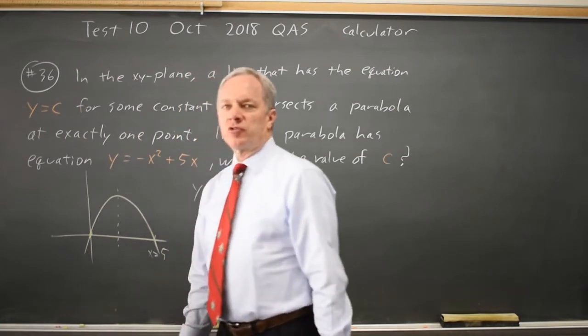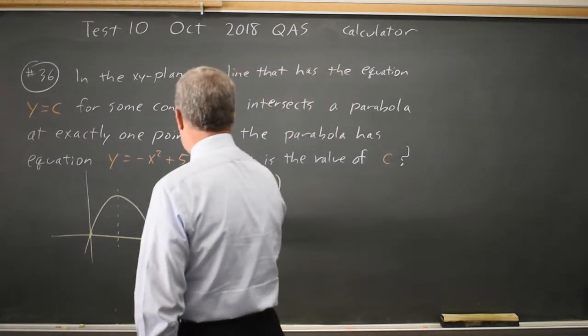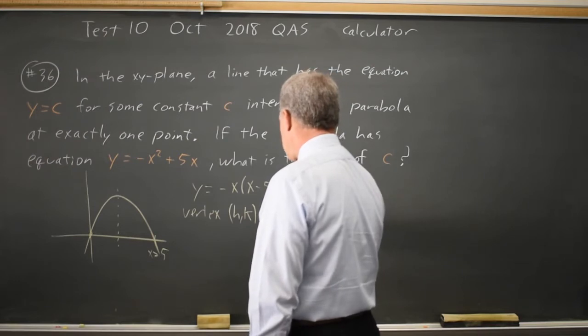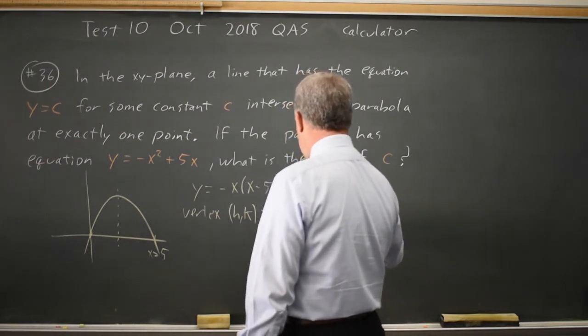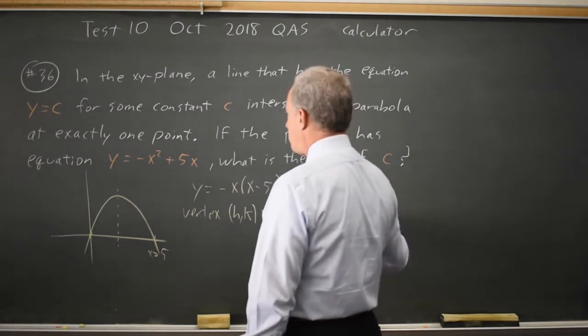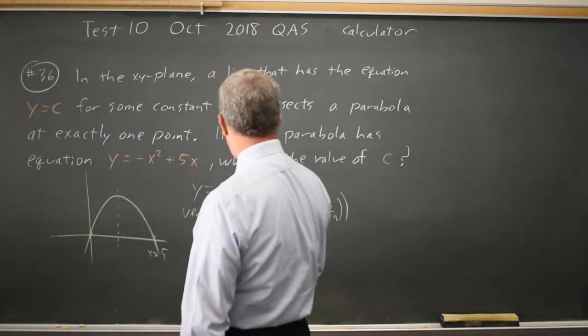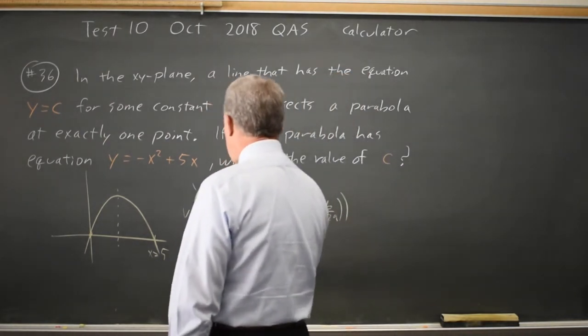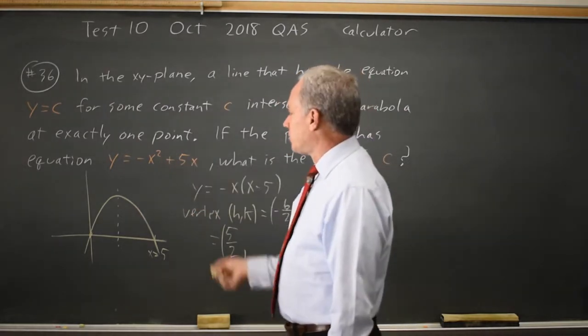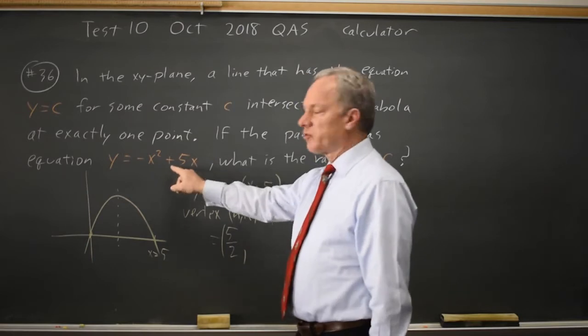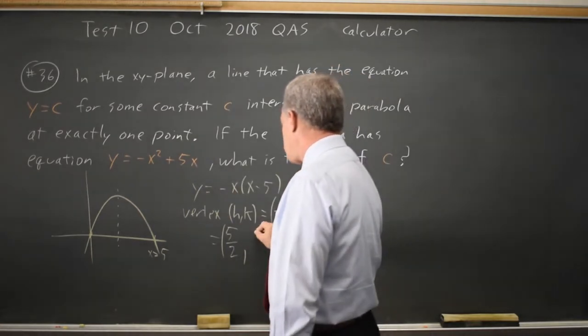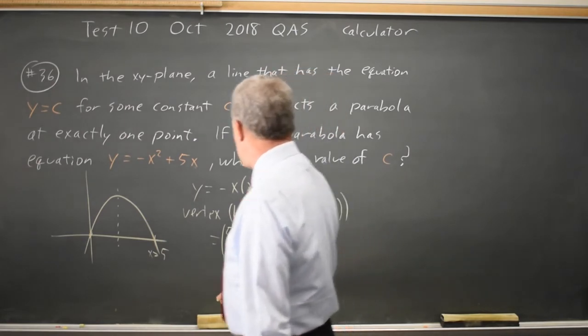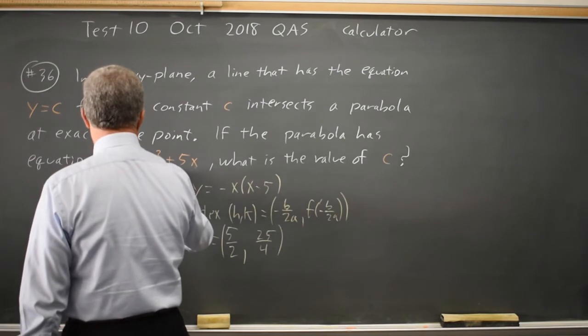And we know that the vertex (h,k) equals negative b over 2a and f of negative b over 2a, where a is negative 1 and b is 5. So negative 5 over negative 2 is 5 halves. And the y value is negative 25 over 4 plus 25 over 2, which is negative 25 over 4 plus 50 over 4, equals 25 over 4. So the vertex here is 5 halves, 25 over 4.